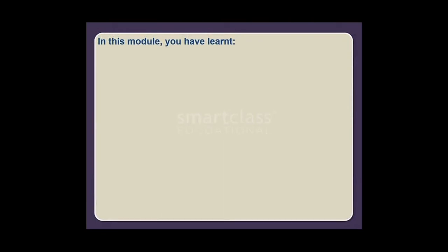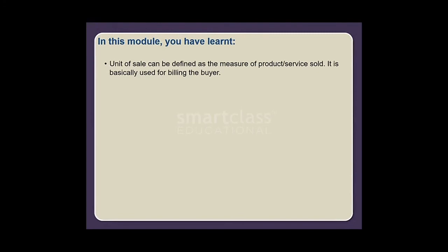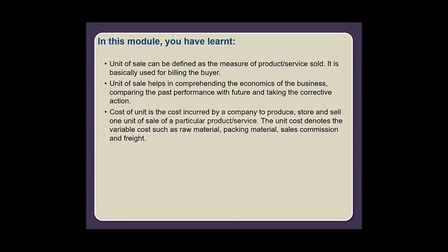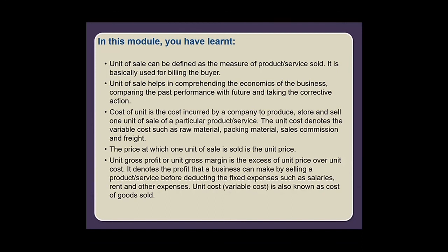In this module you have learned: unit of sale is the measure of product or service sold, used for billing the buyer and comprehending the economics of the business. Unit cost is the cost incurred to produce, store, and sell one unit, covering variable costs such as raw material, packing material, sales commission, and freight. Unit price is the price at which one unit of sale is sold. Unit gross profit is the excess of unit price over unit cost, representing profit before deducting fixed expenses such as salaries and rent. Unit cost or variable cost is also known as cost of goods sold.